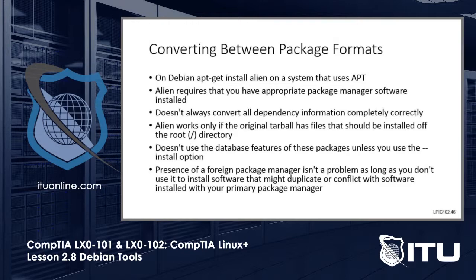We use the tool alien to make package manager software installation work correctly when going from one package system to the other — this is the translation package. There isn't really an equivalent in RPM. It's going from apt format to RPM. There are a couple of conditions: it doesn't always convert all of the dependencies perfectly, so you'll have to dig into it. But if you need a package that only comes one way, you're going to have to work through it.